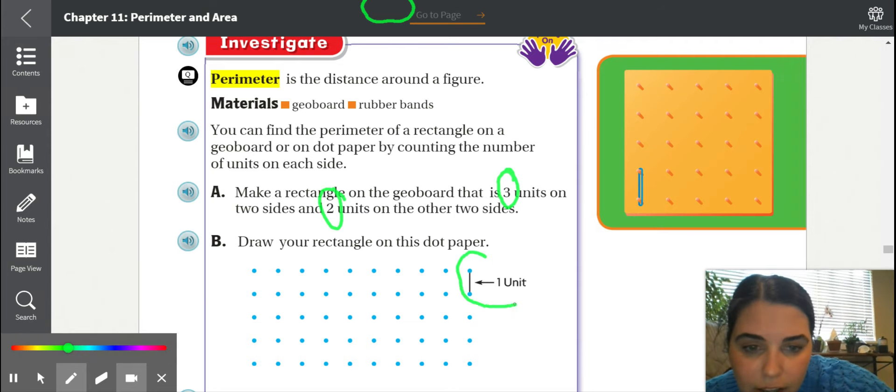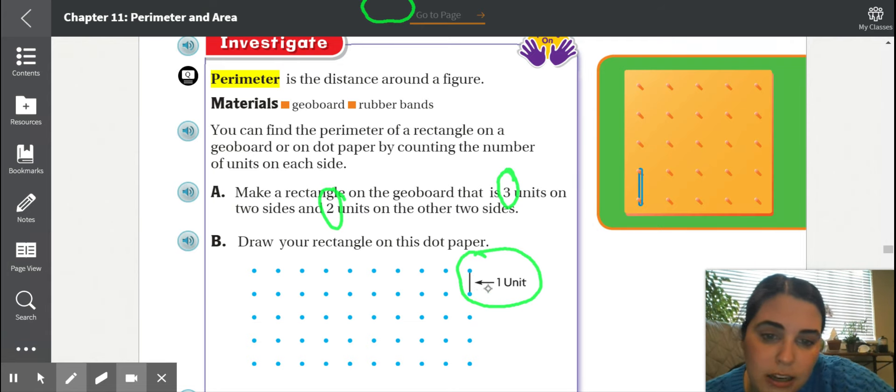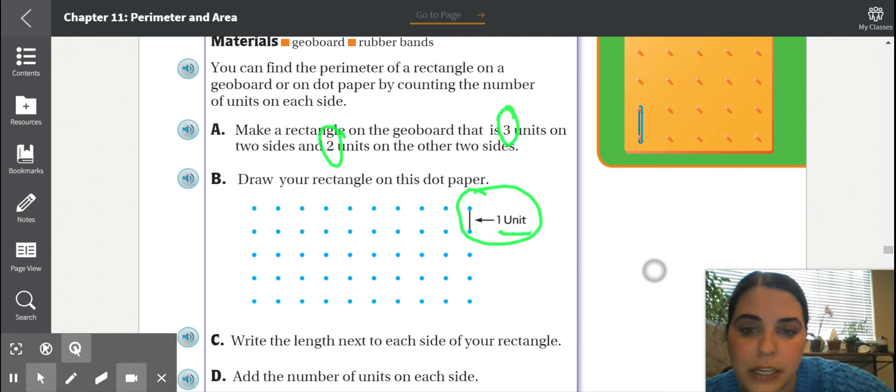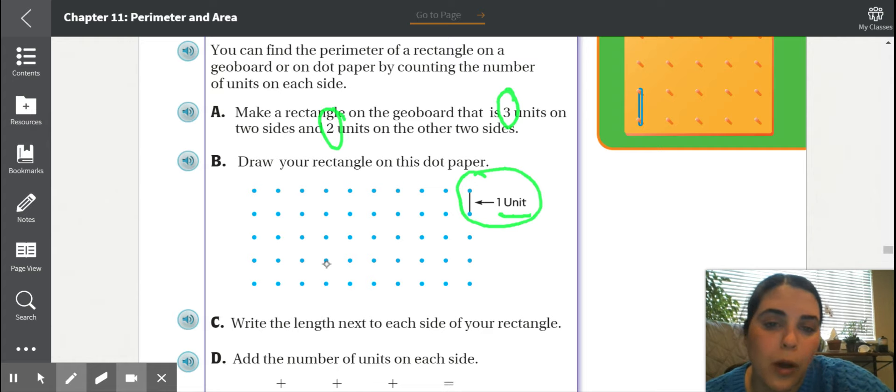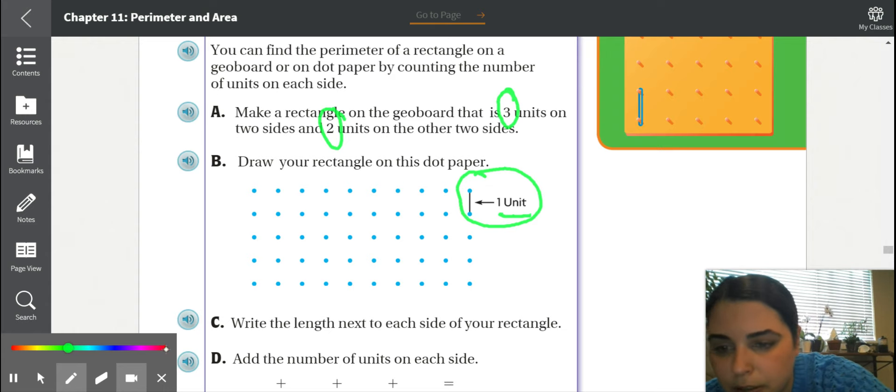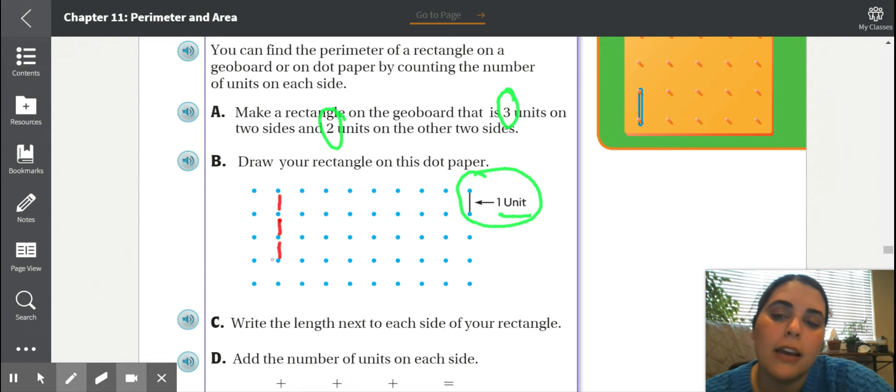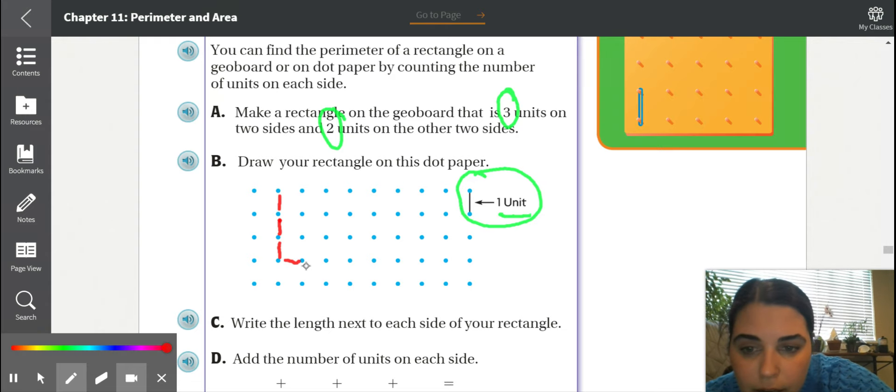Let's read what we need to do. You can find the perimeter of a rectangle on a geoboard or on dot paper. We are going to be using dot paper by counting the number of units on each side. Make a rectangle on the geoboard. We are going to use dot paper that is three units on two sides and two units on the other two sides. See right here, they're telling you that from this dot to this dot equals one unit. What do we need to do? We need to make a rectangle with these connecting dots. One side needs to be three units. So let's go ahead and draw three units. This would be one, two, three. Then the other side needs to be two units. So the bottom needs to be one, two.